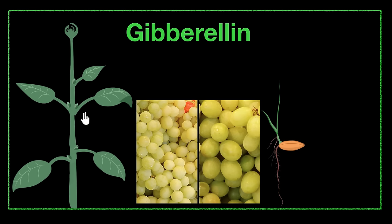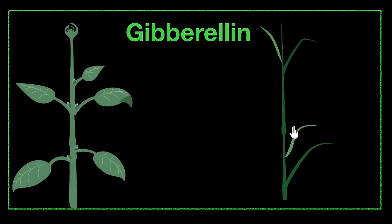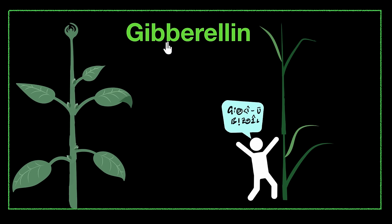As far as our syllabus is concerned, we can just remember the stem elongation part — that's what it's famous for. To remember gibberlin's connection to stem elongation, I go back to the story of how it was discovered. In Japan, farmers found that their rice plants were growing taller for no reason due to excess gibberlin added by a fungus. So I imagine people talking gibberish to a rice plant and the plant starts growing tall. Gibberlin has the word 'gibberish' in it — visualize that every time you hear the word gibberlin.